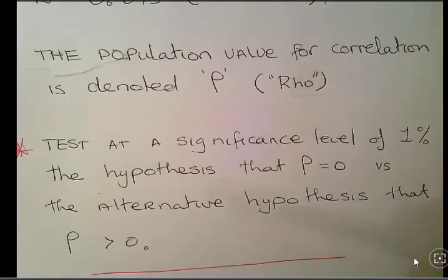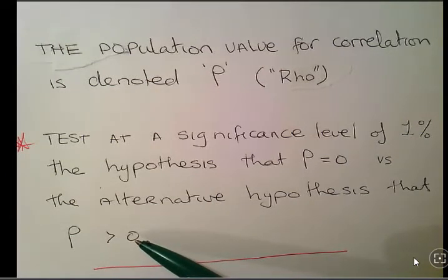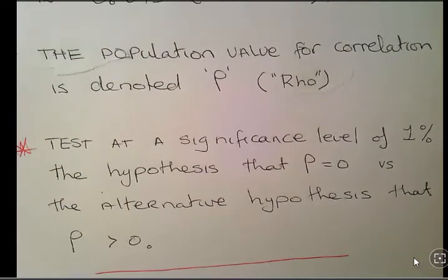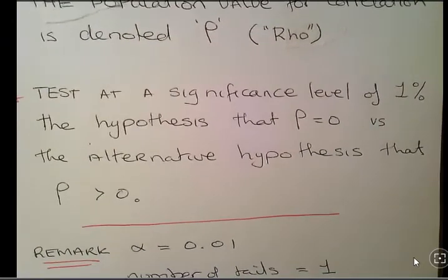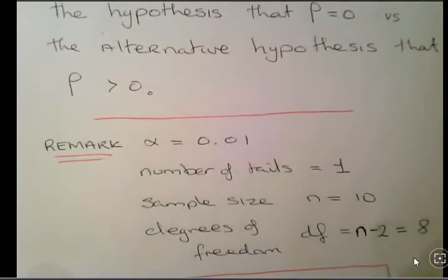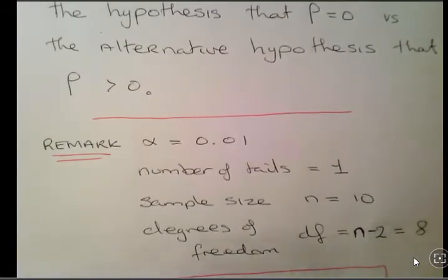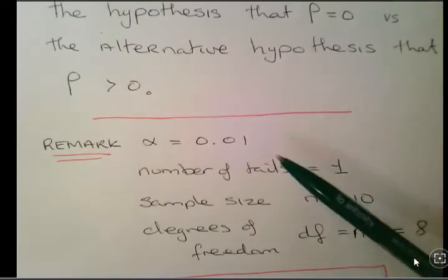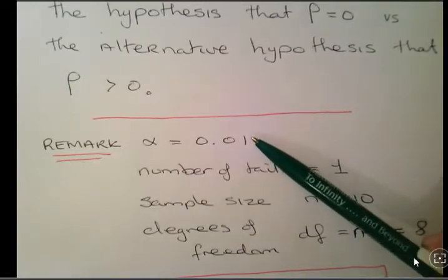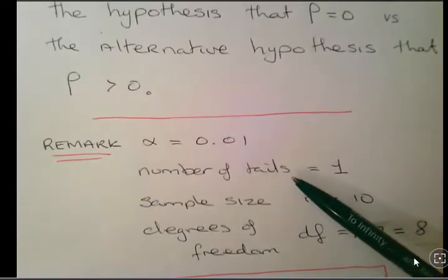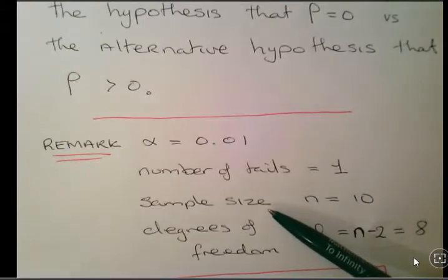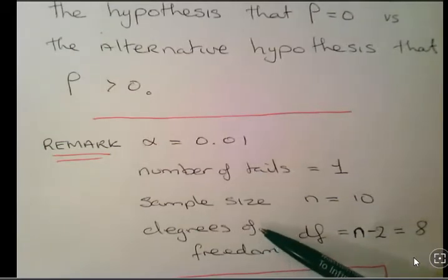Just as a remark, this indicates a one-tailed test, rho greater than 0. What I'm going to do is an important part of the exercise, but it's not actually part of the hypothesis test itself. It's how to calculate the critical value for the test, which you would do from statistical tables. We're told that it's a 1% significance level, so alpha equals 0.01. As I just pointed out, the number of tails is 1, a one-tailed test. The sample size here is 10.